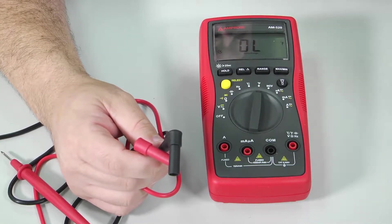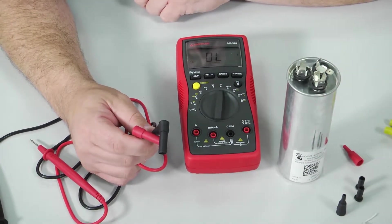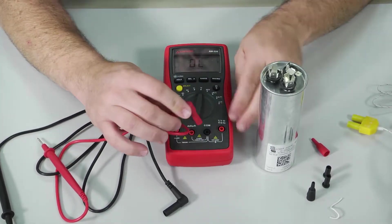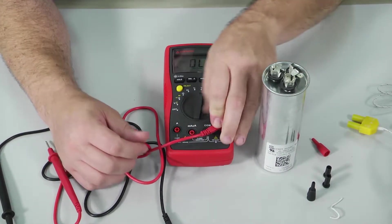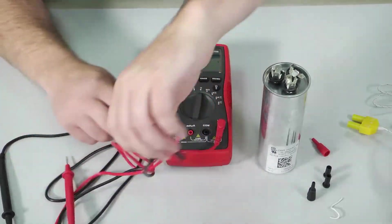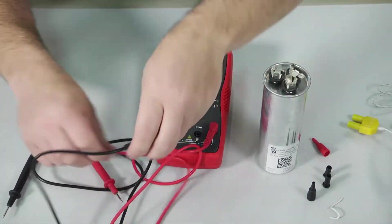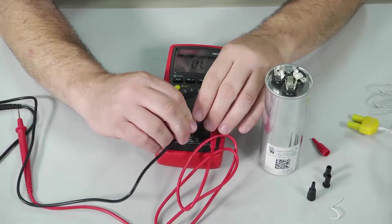So first thing I want to do is test this capacitor. To do that I'm going to place the red lead in the scale right here that has the capacitance symbol on it and the black lead, let's get it untangled here, is going to snap right into common.